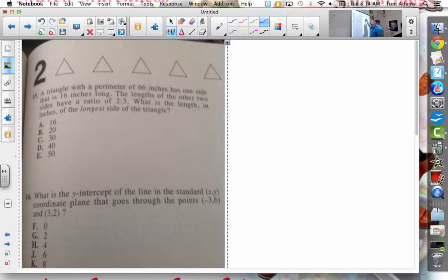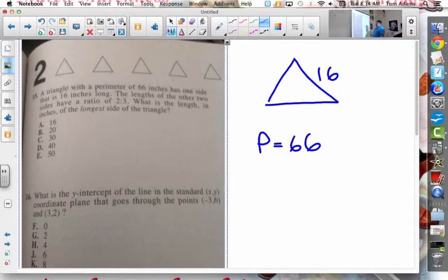So I'm just going to draw a triangle, and one side is 16 inches long, and then I know that the perimeter is a total of 66. The other two lengths are in a ratio of 2 to 3. So this is like 2x, and this is like 3x, okay?